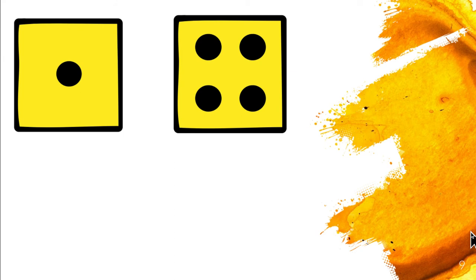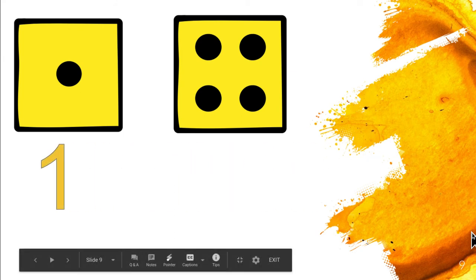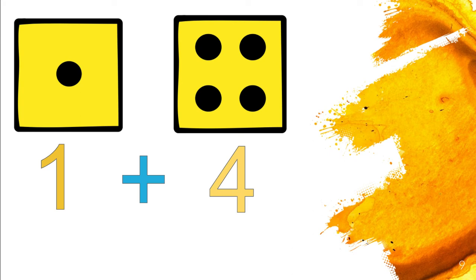Let's look at the next one. We have one and we have four. One plus four — what does one plus four equal? I need to count all the dots. That equals five. One plus four equals five.